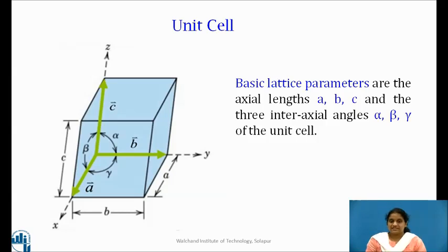The intercepts A, B and C define the dimensions of the unit cell and they are also known as primitives. The angle alpha represents the angle between C and B axis, angle gamma between A and B axis and angle beta represents the angle between C and A axis. The volume of a unit cell is given by A multiplied by B into C. Thus, the basic lattice parameters are the axial lengths and angles between them.